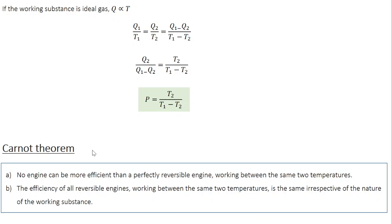Coming to the most important theorem pertaining to the Carnot heat engine — the Carnot theorem — it has two statements. The first states that no engine can be more efficient than a perfectly reversible engine working between the same two temperatures; in essence, the Carnot engine has the highest efficiency among all heat engines. The second statement says that the efficiency of all reversible engines working between the same two temperatures is the same, irrespective of the nature of the working substance, which is evident since the expression T1 minus T2 divided by T1 involves no material parameter.